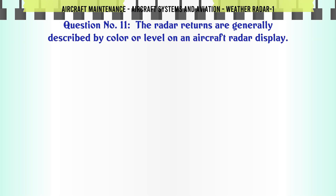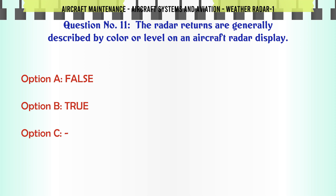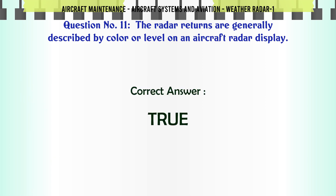The radar returns are generally described by color or level on an aircraft radar display. A: False. B: True. The correct answer is True.